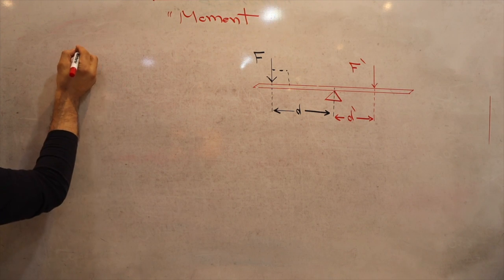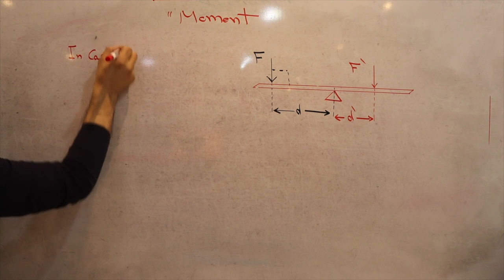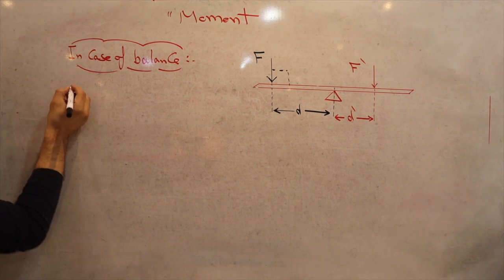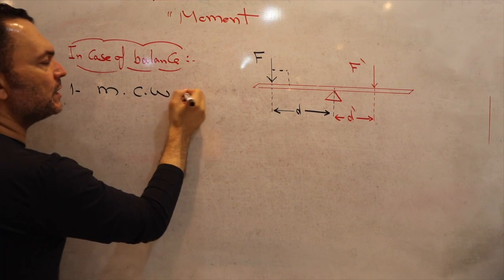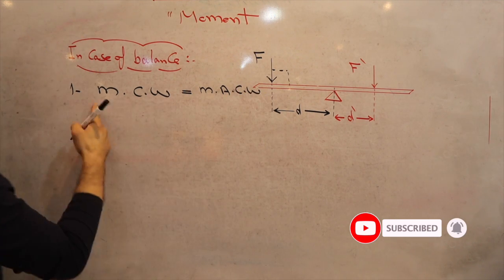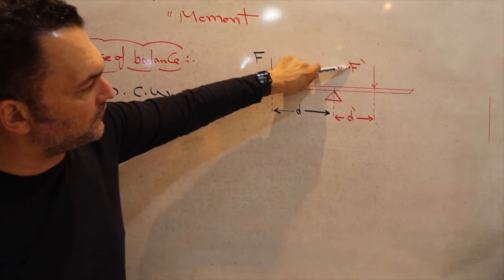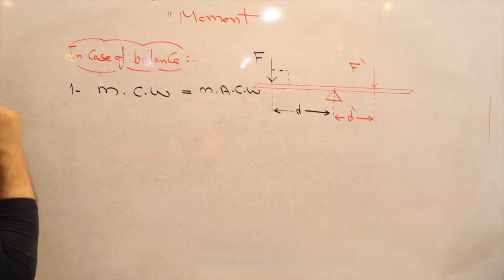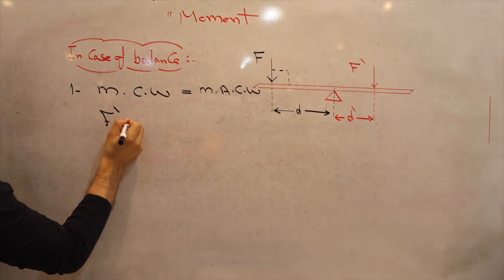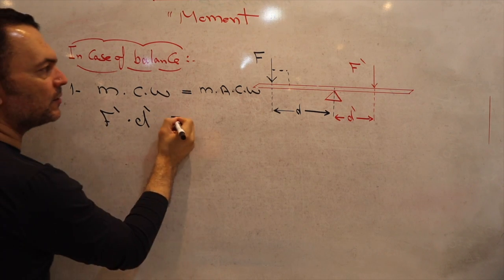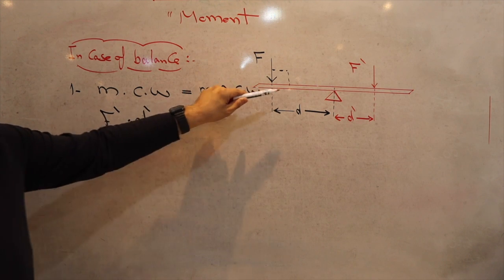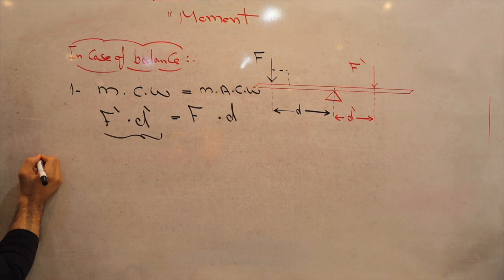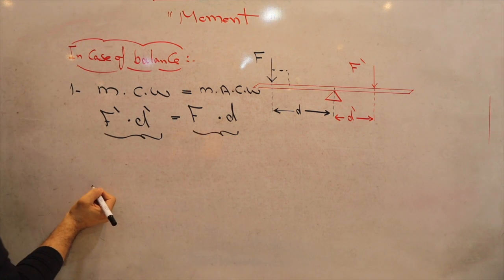Let me write it down. To keep the balance — Condition number one: the moment clockwise should equal the moment anticlockwise. When it comes to that figure, F dash times D dash helps the balance stick rotate clockwise. So F dash times D dash, the moment clockwise, equals the moment anticlockwise, which is F times D.